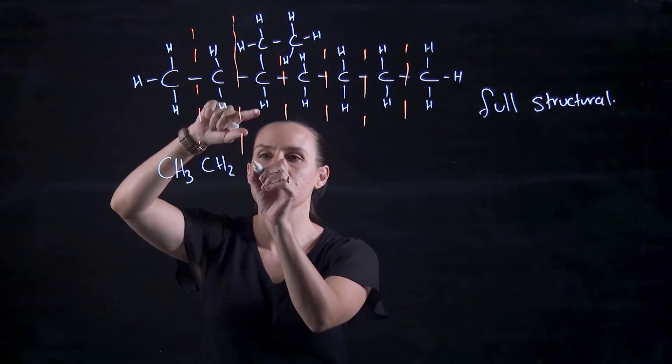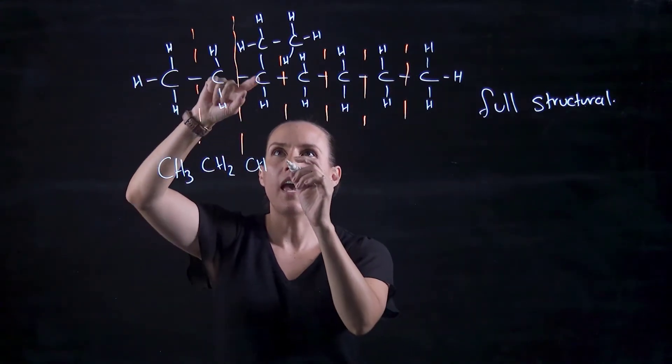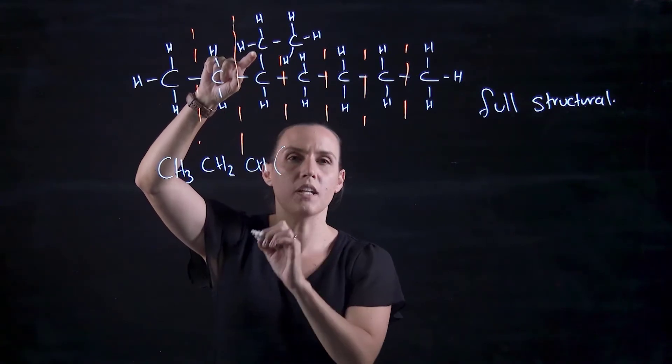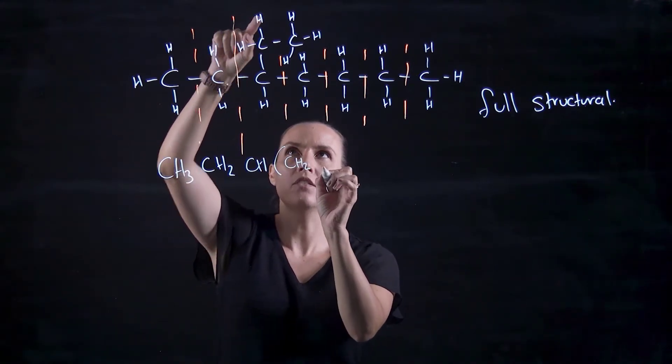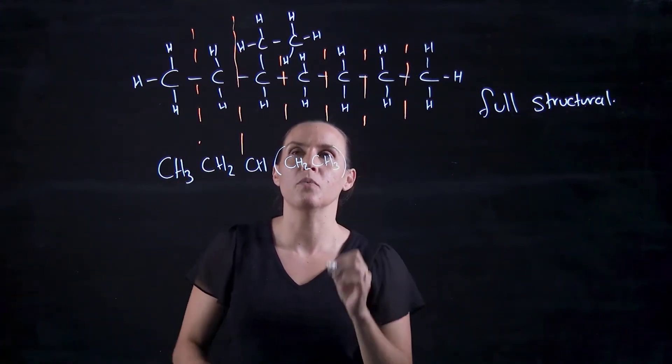Now I've got a CH that's part of the main chain or the backbone, and coming off that, I'll put it in brackets: CH2, one, two, CH3. So that's my little ethyl group there.